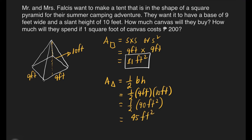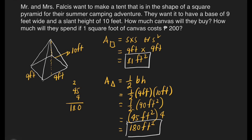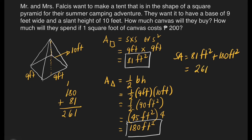This is just the area of 1 triangular face. We multiply it by 4 because we have 4 faces: 45 times 4 equals 180 square feet for the 4 triangular faces. Now we're ready to solve the total surface area by adding the two areas: 81 square feet plus 180 square feet equals 261 square feet.